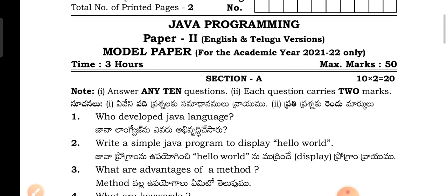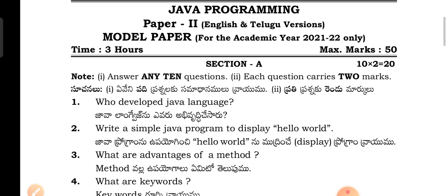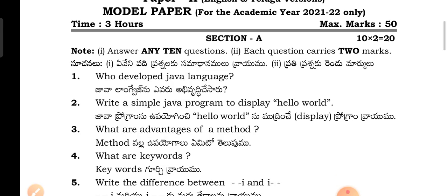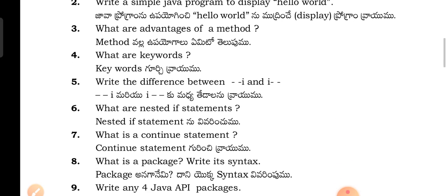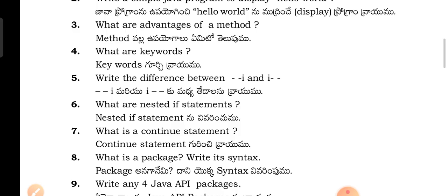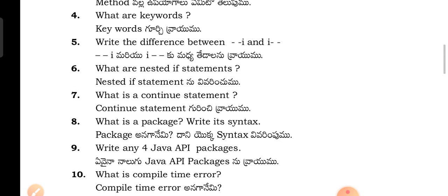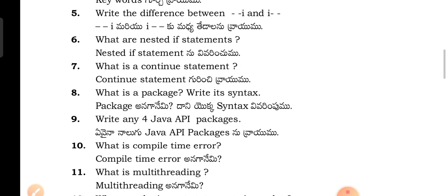Let me go through them one by one. Java programming for computer science second year students in Telangana state. Section A: Who developed the Java language? Write a simple Java program to display Hello World. What are the advantages of a method? What are keywords? What is the difference between i++ and ++i? What are nested if statements?